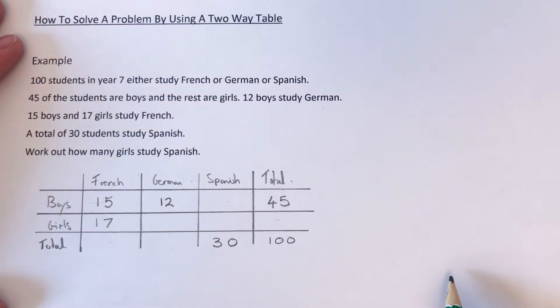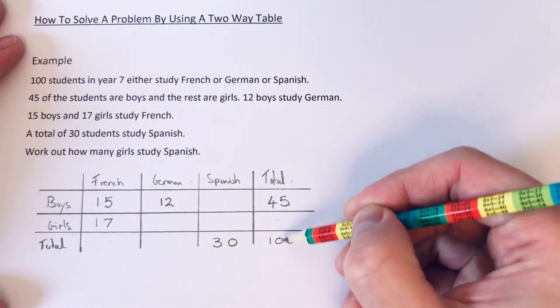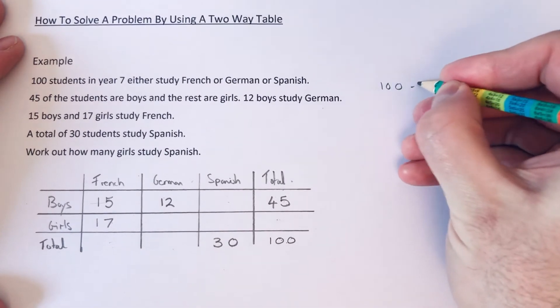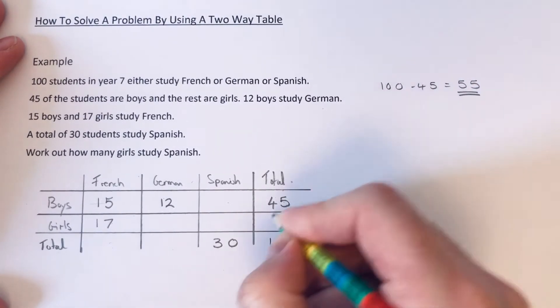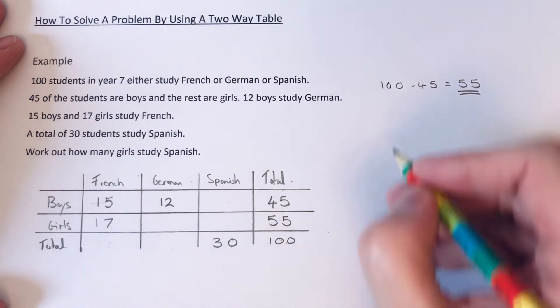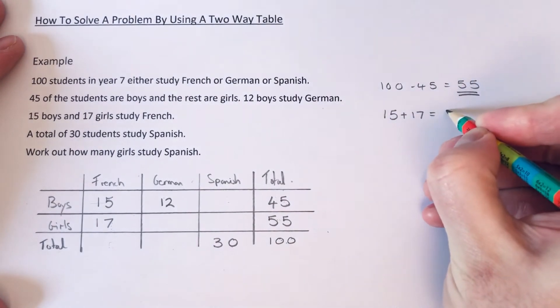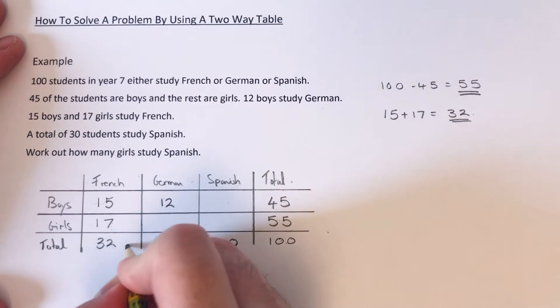So I think the best place to start here would be to work out how many girls we have. So these two here add up to 100. So if we do 100 take away 45, that will give us the amount of girls, which is 55. And we could work out how many pupils we've got studying French because we just need to add up 15 and 17. So 15 add 17 is 32.